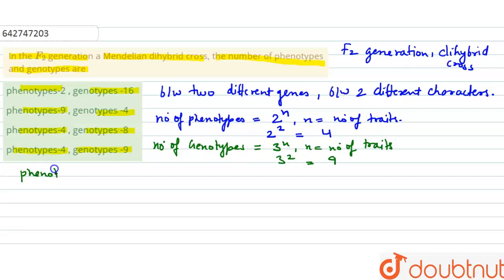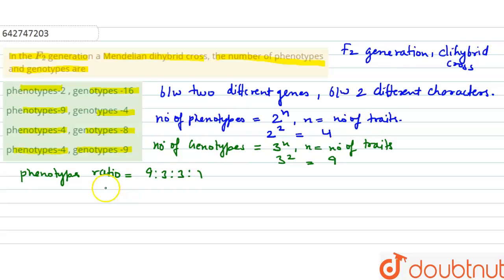The phenotype ratio we will get from the dihybrid cross is 9:3:3:1.